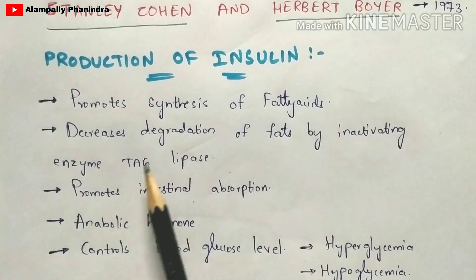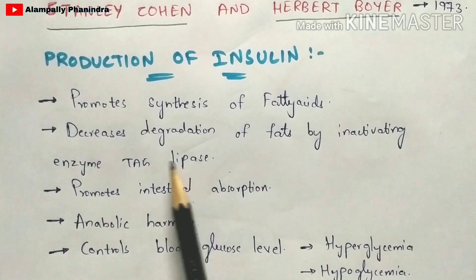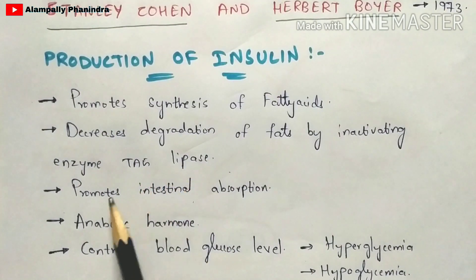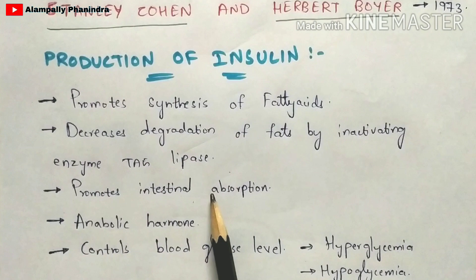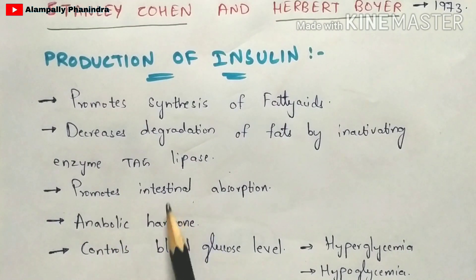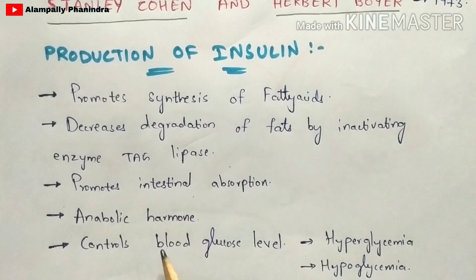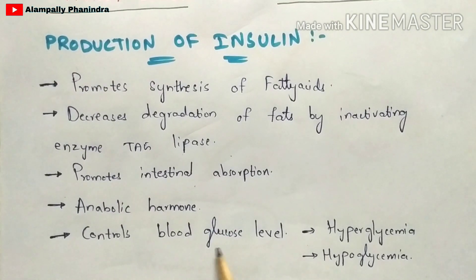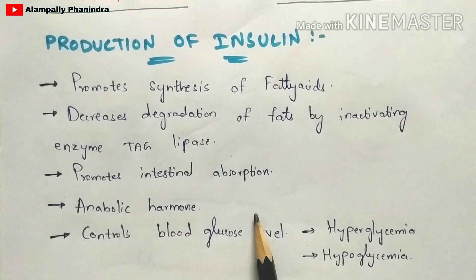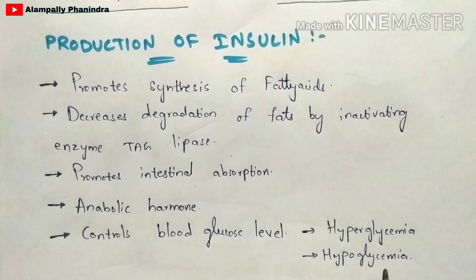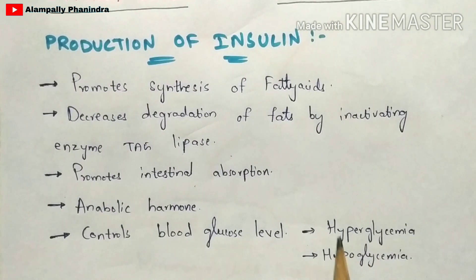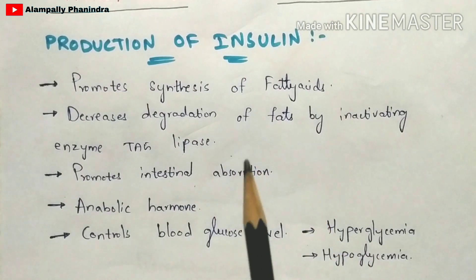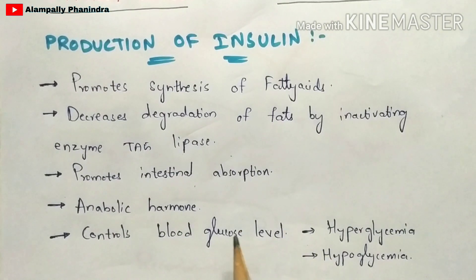Insulin also decreases the degradation of fats by inactivating an enzyme called TAG lipase (triacylglycerol lipase). It promotes intestinal absorption and is called an anabolic hormone. It controls blood glucose levels — if blood glucose levels increase it is called hyperglycemia, and if they decrease it is called hypoglycemia. When insulin is present in the human body, it prevents both hyperglycemia and hypoglycemia.